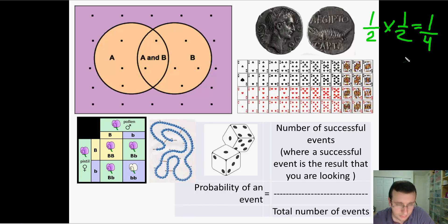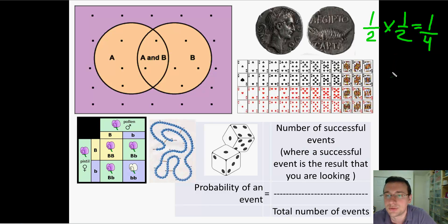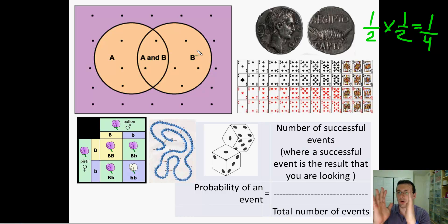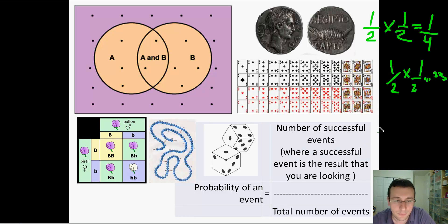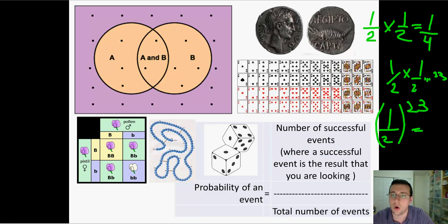Remember when we talked about the probability of independent assortment for 23 chromosomes always being one-half? It's the same concept. The chances of all chromosomes in one gamete being entirely from your dad — and all in the other gamete being entirely from your mom — are dismal. For each of the 23 chromosomes, the chance is one-half, so you multiply: one-half to the power of 23.